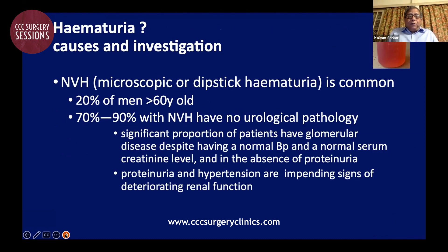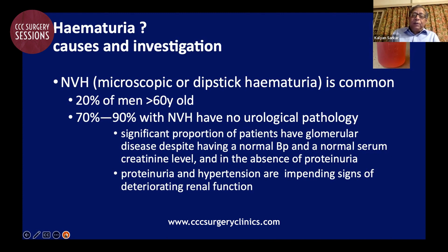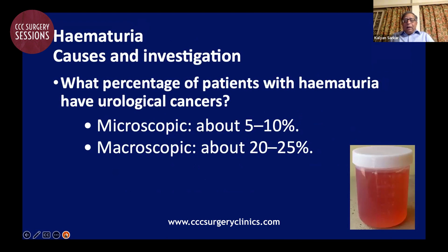Non-visible hematuria is quite common — it may be present in 20 percent of men over 60 years old — but 70 to 90 percent have no urological pathology. Many patients may have glomerular disease despite having non-visible hematuria with a normal blood pressure, normal serum creatinine, and absence of proteinuria. However, if proteinuria and hypertension are present in a patient with microscopic or dipstick hematuria, these are impending signs of deteriorating renal function. One must not forget this nephrological angle in the evaluation of hematuria.